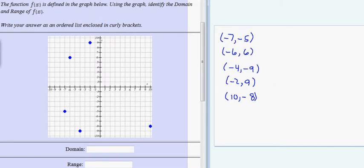So the domain over here, if you remember what domain is, the domain is just a set of all possible inputs, which are my x coordinates. So I just need to list the x coordinates over here: negative 7, negative 6, negative 4, negative 2, and 10.